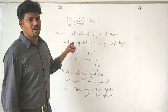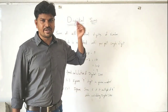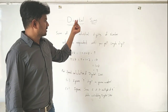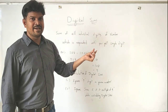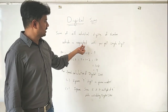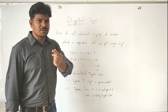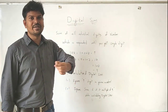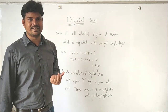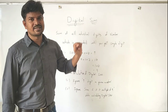Digital sum is nothing but the sum of all individual digits of a number. If the result again has two digits, the process is repeated until you get a single digit. The process has to be repeated until you arrive at a single digit — that process is called digital sum.